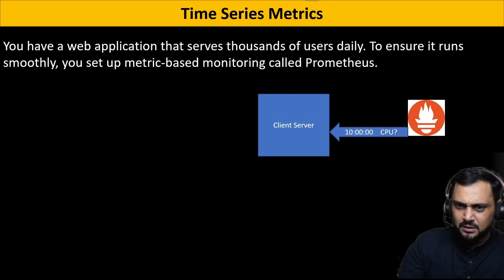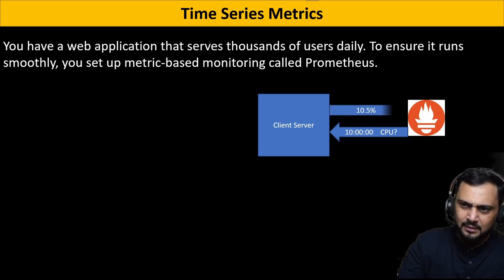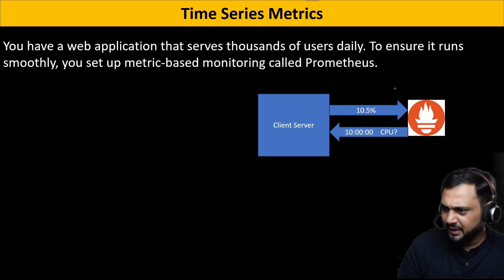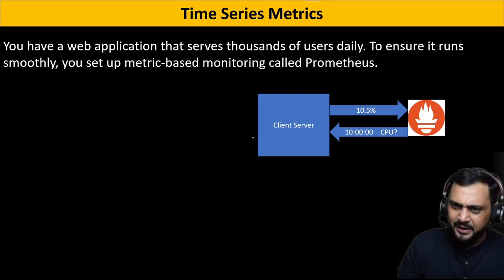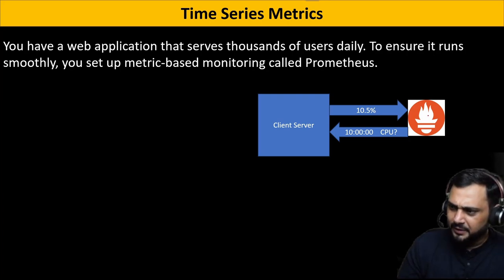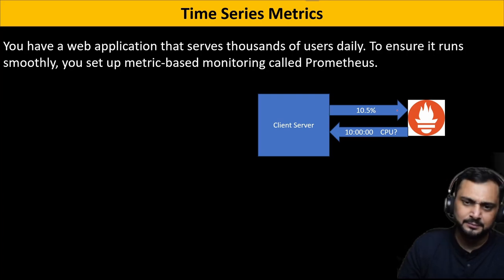Prometheus server pulls the metrics from the client server and saves the value it receives. Please bear in mind that Prometheus is mainly a pull-based metrics tool. Pull-based means Prometheus sends the request to the client and pulls the data — that is called pull-based.